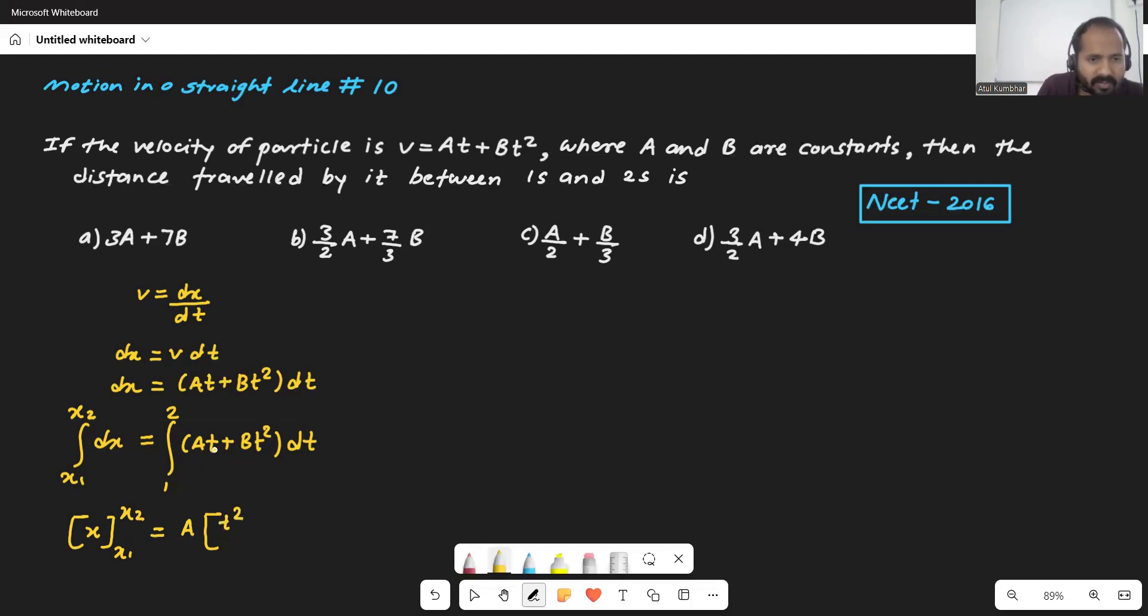And how much it will be? Basically, it will be T^(n+1) which means 1 plus 1 is 2. T² divided by n plus 1, that is what? 2. Within limit 2 to 1, 1 to 2 it should be. Then for the next one also, it will be B bracket T^(n+1), n plus 1, 2 plus 1 will be 3. T³ divided by 3 between 1 to 2.